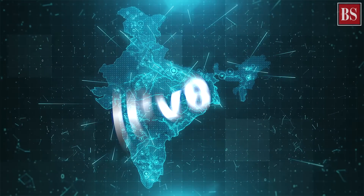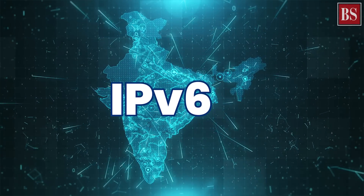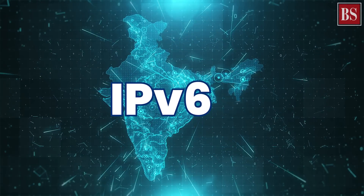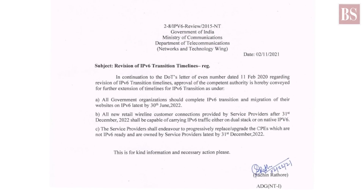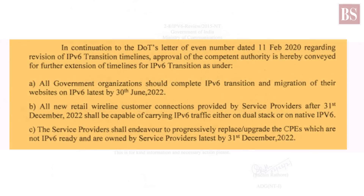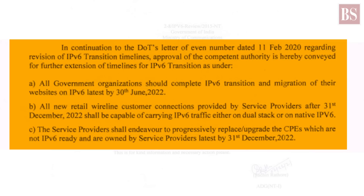India is also upgrading to Internet Protocol version 6. In November 2021, the Department of Telecom released a circular revising the transition timeline, setting December 2022 as the deadline for Internet Service Providers to make changes to their network as required by the latest Internet Protocol. The circular has set 30 June 2022 as the last date for government organizations to complete the transition to IPv6.